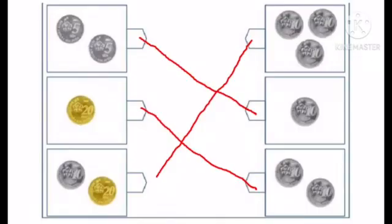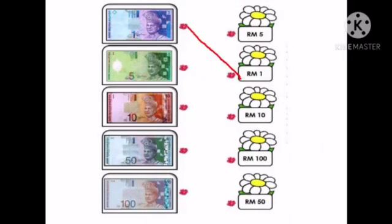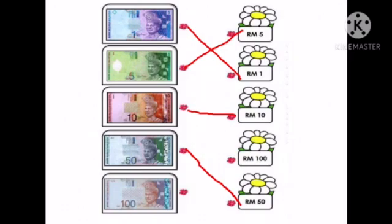Let's go to the notes. We have RM1. Then, yes, very good. We have Ringgit Malaysia 5. Then we have Ringgit Malaysia 10. Ringgit Malaysia 50. And then the last one is Ringgit Malaysia 100. Very good, children. These are coins and notes.